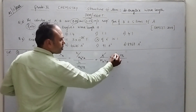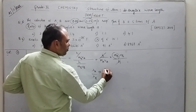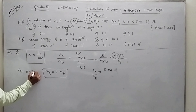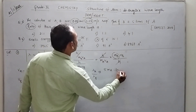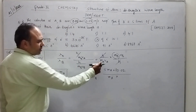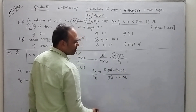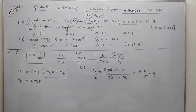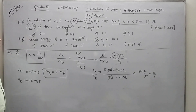Substituting MB as 5 MA: lambda A by lambda B is 5 MA into VB, divided by MA into VA. VA is 0.05 m/s, VB is 0.02 m/s. Substituting VB as 0.02 and VA as 0.05, MA and MA get cancelled. Taking 2 by 5, it becomes 5 into 2 by 5, so 5 gets cancelled — nothing but 2 by 1. Hence we can say the ratio of lambda A to lambda B is 2 by 1.